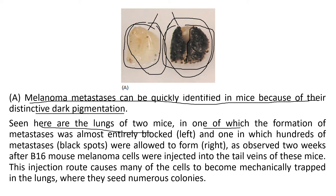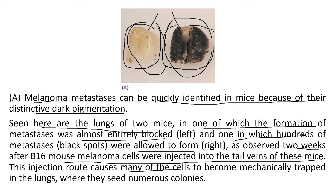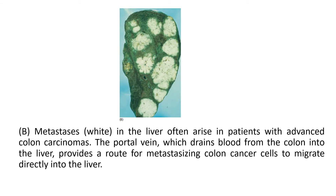Seen here are the lungs of two mice: one in which metastasis formation was almost entirely blocked, and one in which hundreds of metastases were allowed to form. This was observed two weeks after B16 mouse melanoma cells were injected into the tail veins. This injection route causes many cells to become mechanically trapped in the lungs, leading to development of a black layer — these are cancerous carcinoma cells developing in the lungs, which is pretty much similar to what occurs in humans.